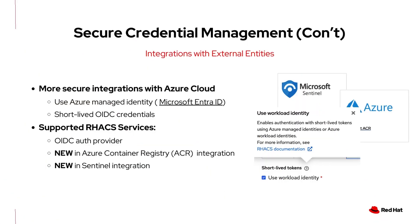ACS 4.7 enhances integration with Azure Registry and Microsoft Sentinel using short-lived OpenID Connect or OIDC credentials from Microsoft's identity provider. These credentials authenticate ACS services to Azure APIs. This builds on the 4.4 release integration with other cloud providers like AWS and GCP. This update also introduces machine-to-machine authentication through Azure AD service principals, allowing more secure API access.